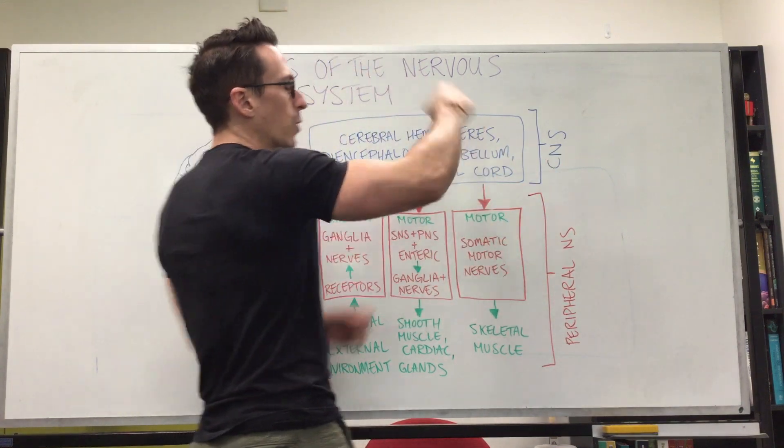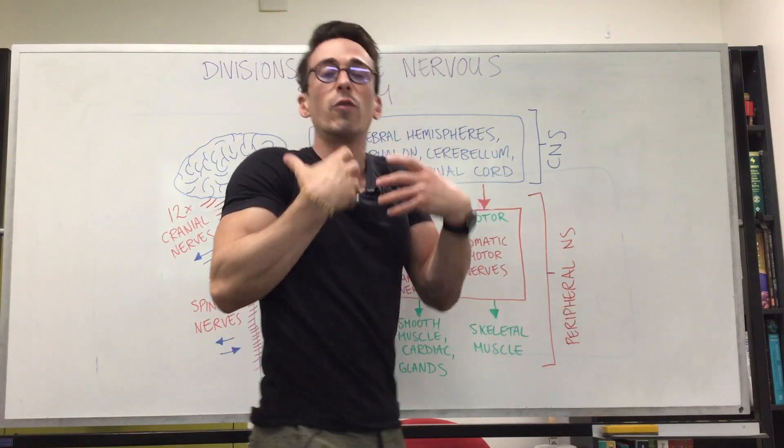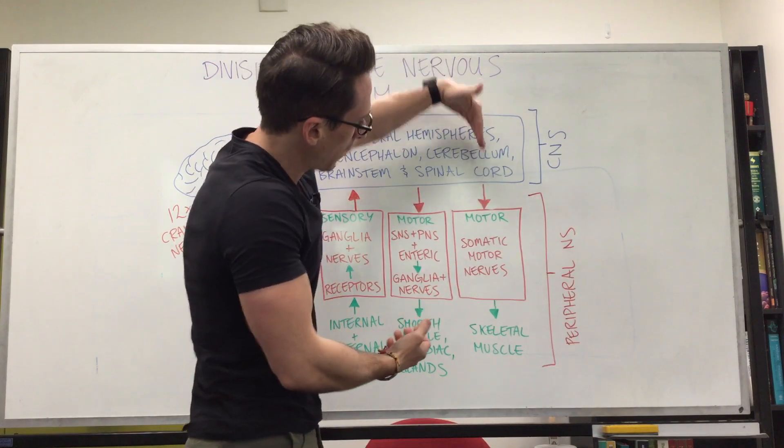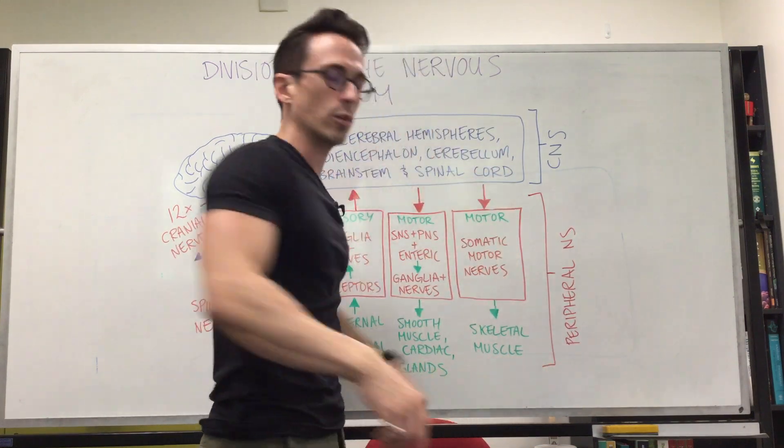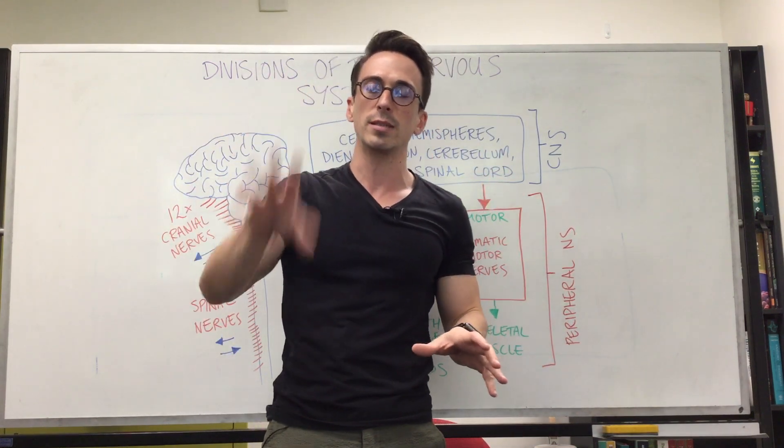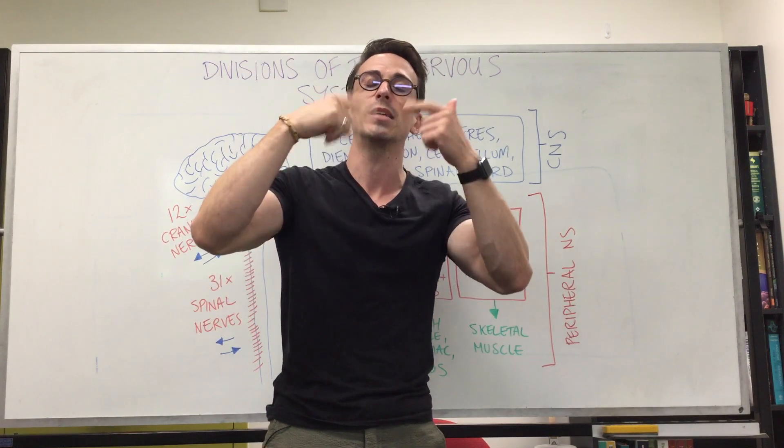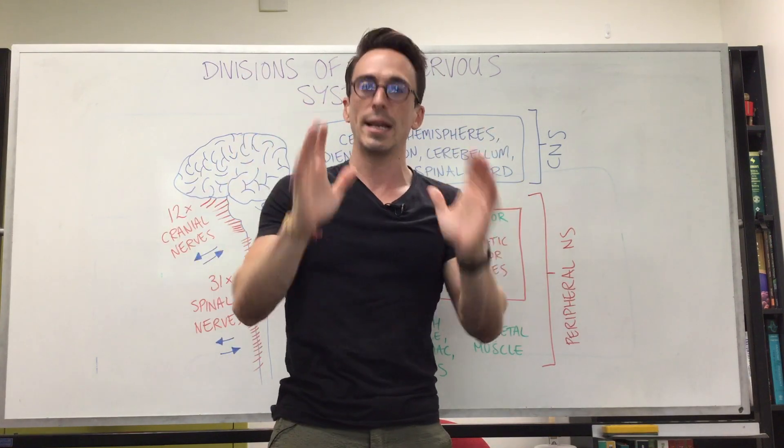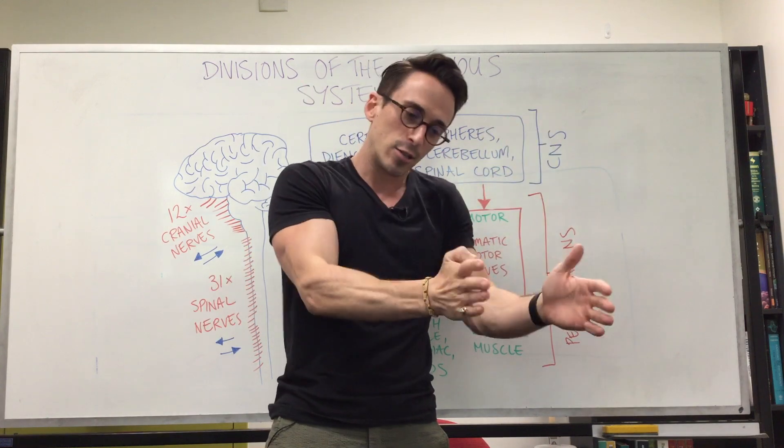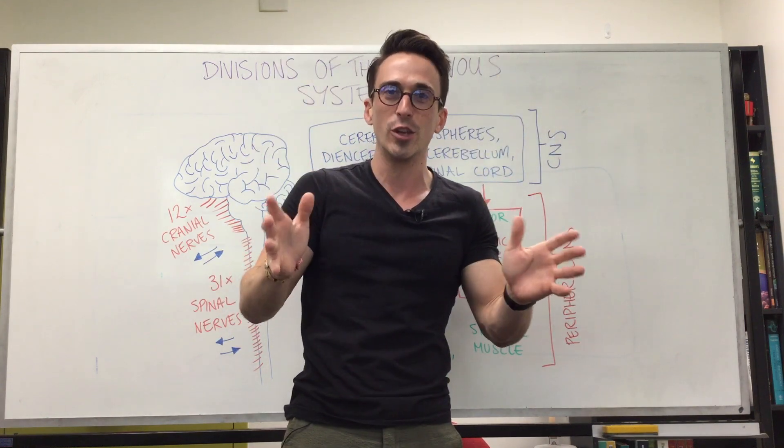Then we've got the somatic motor system. This is where we consciously move the body. The ultimate output is skeletal muscle, the muscle attached to bones that allows for leverage points, allows our tongue to move, our diaphragm to contract. These are the anatomical and functional divisions of the nervous system.